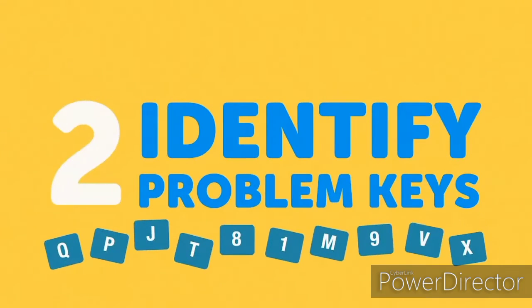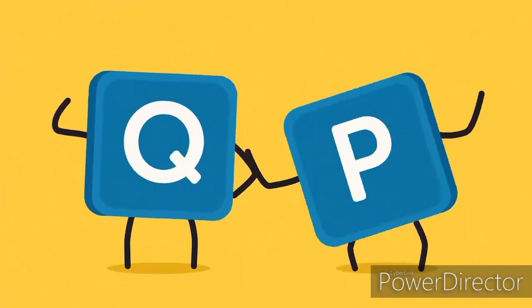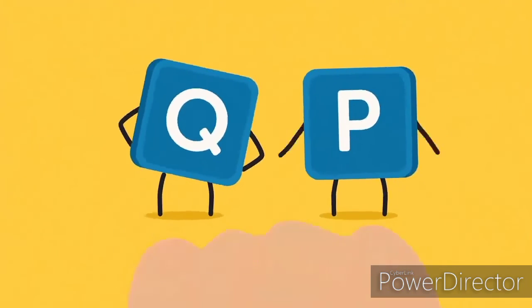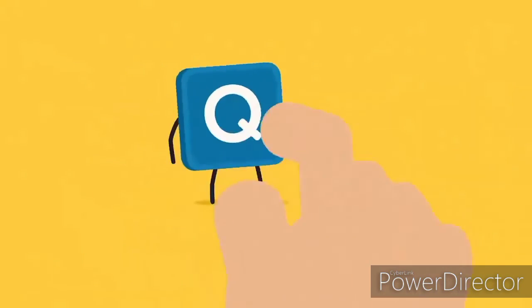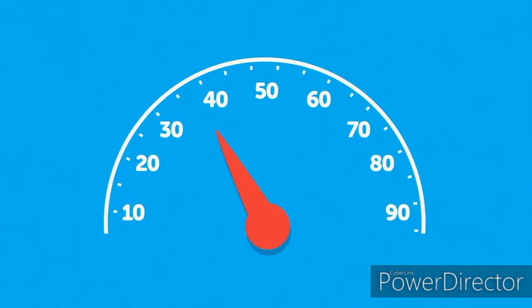Identify problem keys. When you first learn to type, you will undoubtedly encounter keys that slow you down. It is important to identify these keys and practice them on a daily basis. Practicing those problem keys for just 10 minutes a day will increase your speed and accuracy scores.